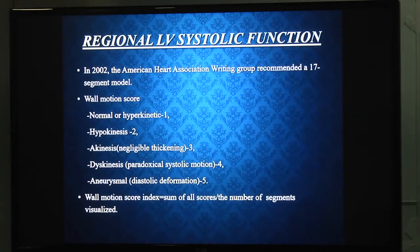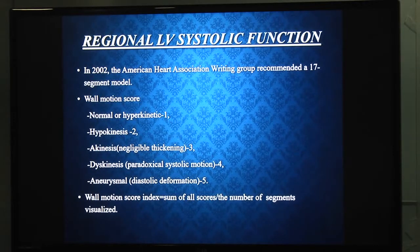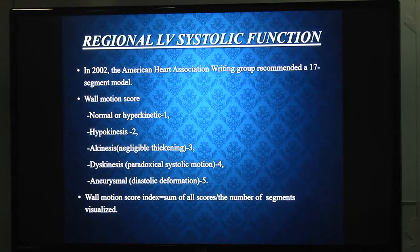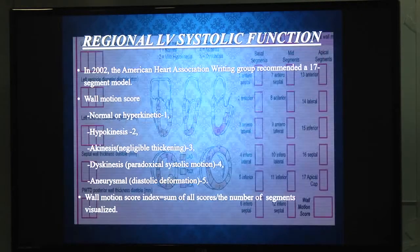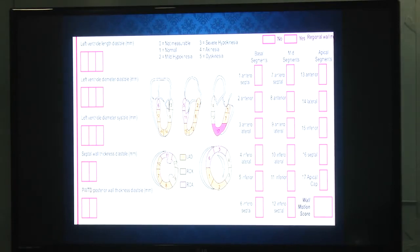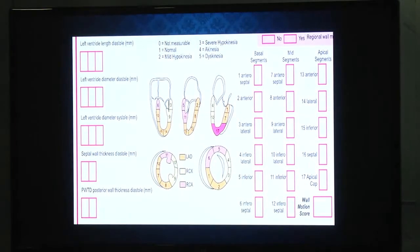Dyskinesia, which is paradoxical systolic motion, receives a score of 4. Aneurysmal segments — where there is deformation in diastole — receive a score of 5. The wall motion score index is calculated as the sum of all segment scores divided by the number of visualized segments. The five basic views used are: four-chamber, two-chamber, long axis, short axis at the mid-papillary level, and transgastric short axis at the basal level.